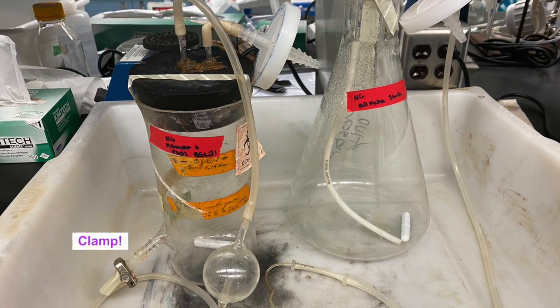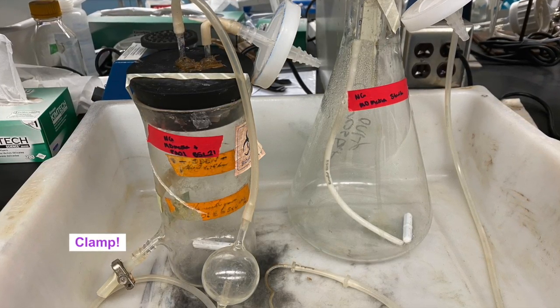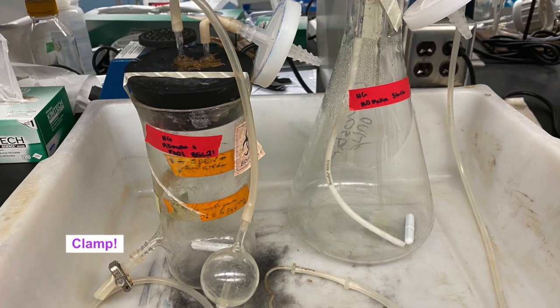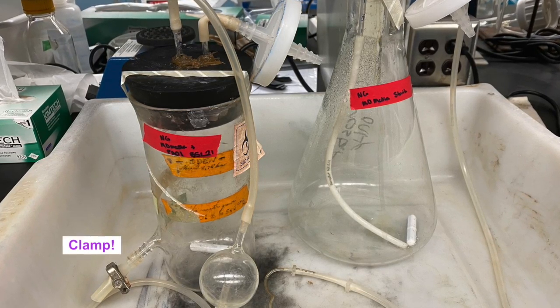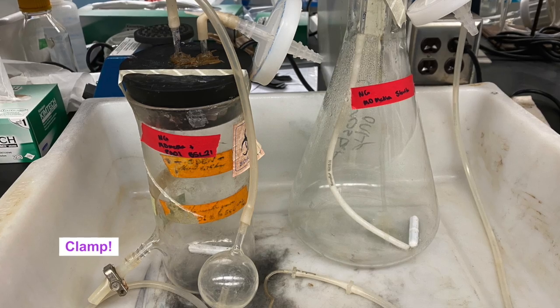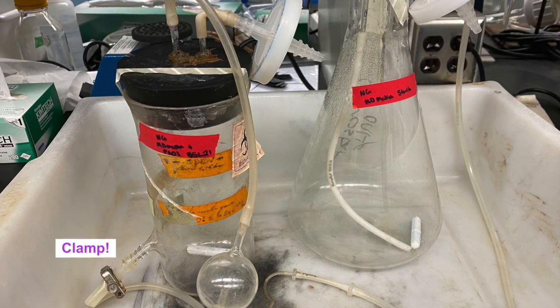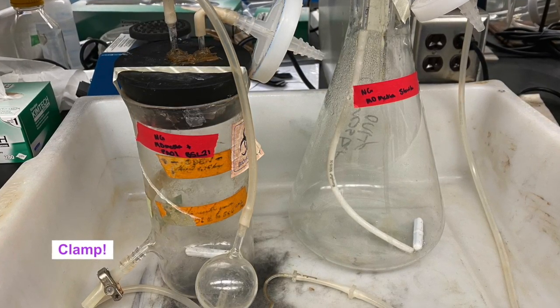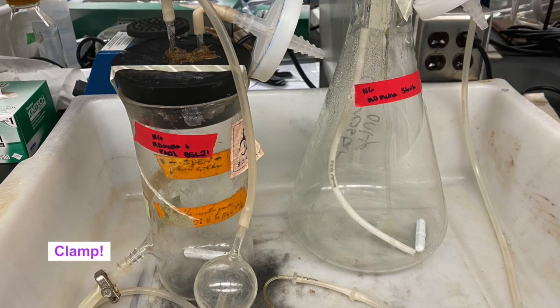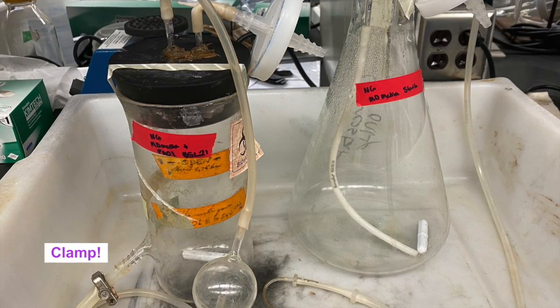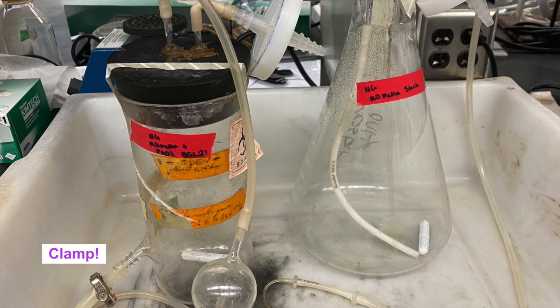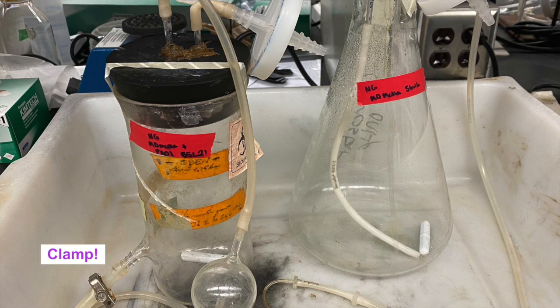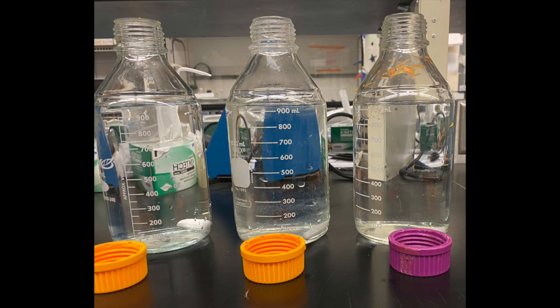Before autoclaving, a clamp will be placed on the growth chamber to prevent an influx of air entering the chemostat after we have removed it from the autoclave. Remember to use the correct autoclave setting and place autoclave tape on the chambers of the chemostat. Also, be sure to use an appropriate autoclave safe secondary container to hold your solids equipment.